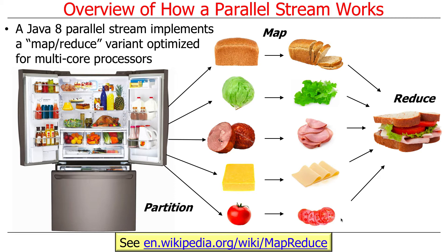The way to think about this is that a parallel stream implements a variant of the famous MapReduce model of parallel processing. MapReduce is used for all kinds of parallel computing, especially in large-scale cluster or cloud environments. The way that Java 8 streams works is limited to a multi-core processor as opposed to a cluster of computers, but the same basic concepts apply. You take your original source of input, like the food in your fridge, and you partition it — a loaf of bread, some lettuce, some meat, cheese, and tomatoes.